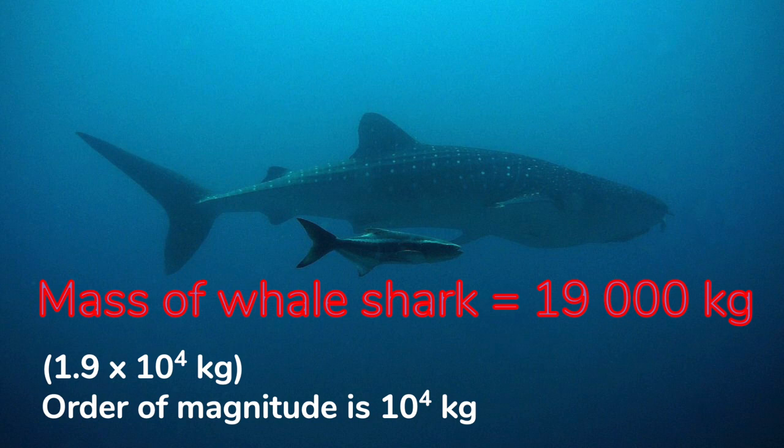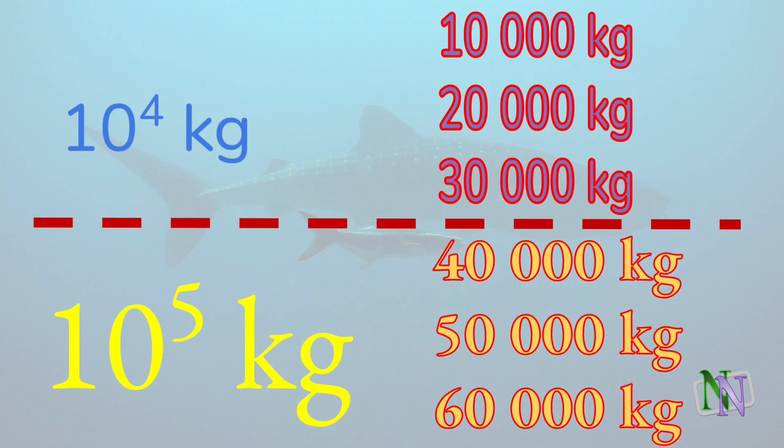The mass of this shark is approximately 19,000 kilograms. When we're talking about orders of magnitude, we only look at the powers of 10 — in this case 10 to the 4. In other words, whale sharks are measured in tens of thousands of kilos. If a whale were 90,000 kilograms, it would actually be closer to 10 to the 5 kilograms. The dividing line is between 3 and 4 times 10 to the 4, but IB will usually give you values which are clearly one or the other.